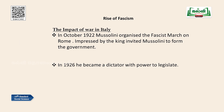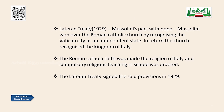Impressed by the march, the king invited Mussolini to form the government. In 1926, he became a dictator with the power to legislate. Mussolini then made a pact with the Pope, winning over the Roman Catholic Church by recognizing Vatican City as an independent state. In return, the Church recognized the Kingdom of Italy. The Roman Catholic faith was made the religion of Italy, and compulsory religious teaching in schools was ordered. These provisions were codified in the Lateran Treaty signed in 1929.